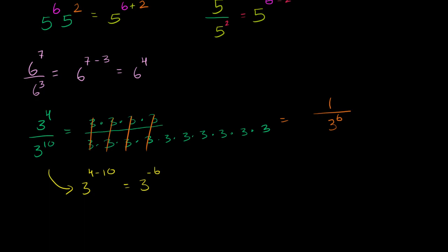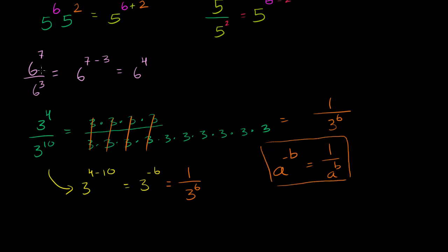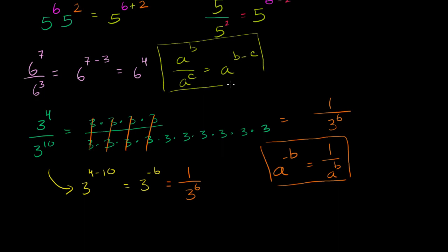So now you're learning a little about what it means to take a negative exponent. 3 to the negative 6th power is equal to 1 over 3 to the 6th power. I'm going to do many more examples of this in the next video. But if you take anything to a negative power, a to the negative b power is equal to 1 over a to the b. And earlier in this video we saw that a to the b over a to the c equals a to the b minus c. Those are the two properties we've been using.